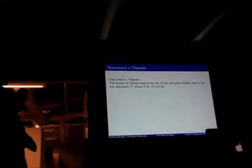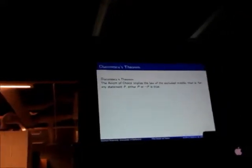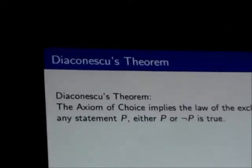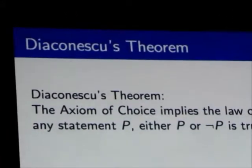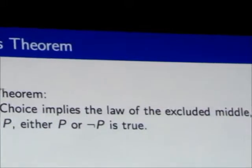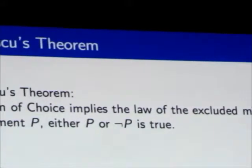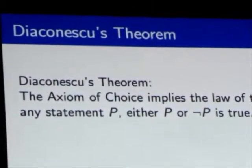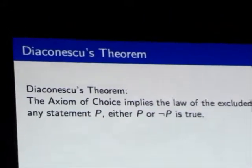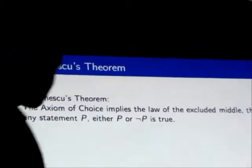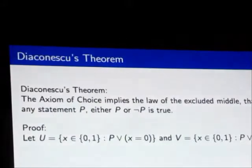It turns out this is implied by the axiom of choice. We call this Diaconescu's Theorem. This guy published this in 1975, but the problem appeared as an exercise in a textbook in 1967. Already in the 60s, it was considered simple enough to be a student's exercise. Somehow someone published this eight years later.